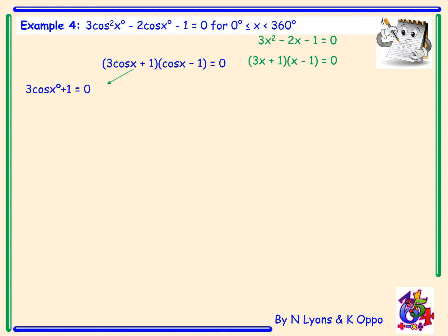Taking the first bracket: 3 cos x + 1 = 0. This rearranges to make cos x the subject, giving cos x = negative one third. We then find where the angles lie — as it's equal to negative one third, we're looking for angles in the second and third quadrant.